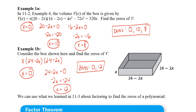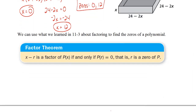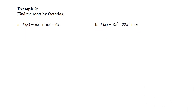That brings us to the factor theorem. We can use what we did in lesson 11.3 with factoring to find the zeros of a polynomial. What the factor theorem states — and it's really important that you get this in your notes — is that (x minus r) is a factor of a polynomial as long as the polynomial is set equal to zero and r is a zero of the polynomial. Let's look at an example.